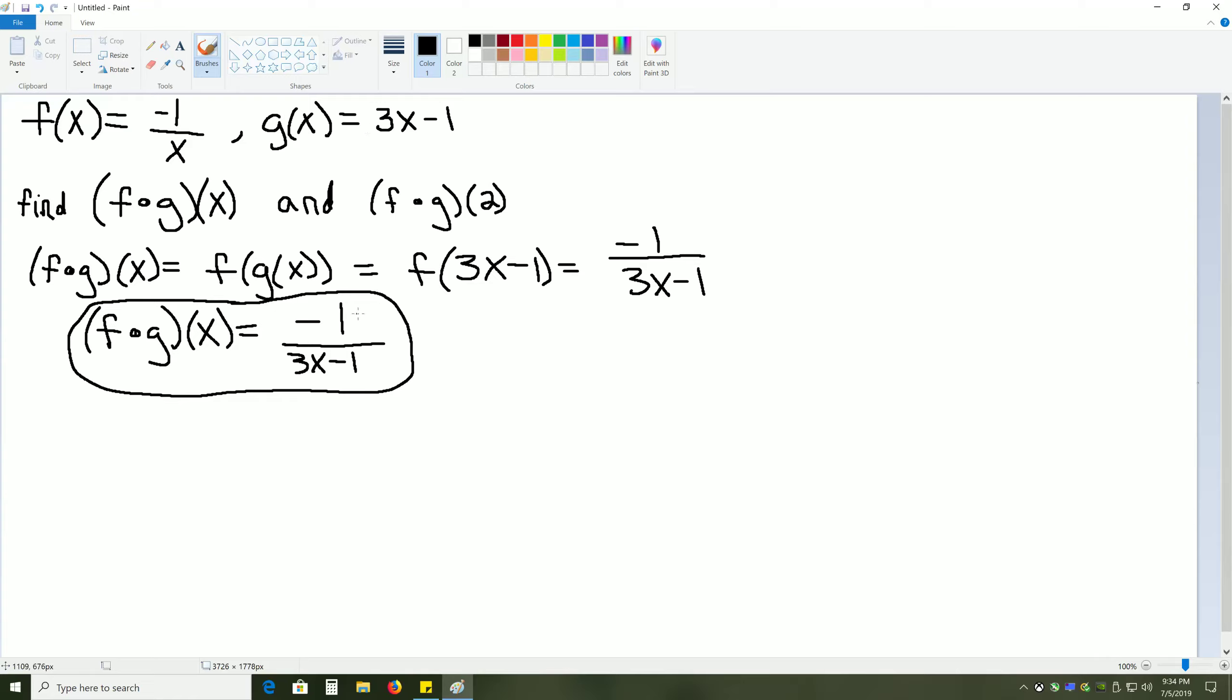The second step is to look at the final answer, negative 1 over 3x minus 1, and check if there's anything in this problem that would cause bad domain values. And quickly we can see that there is. We have 3x minus 1 in the denominator. If that were equal to 0, this would cause division by 0. So we're going to take that 3x minus 1 and set it equal to 0.